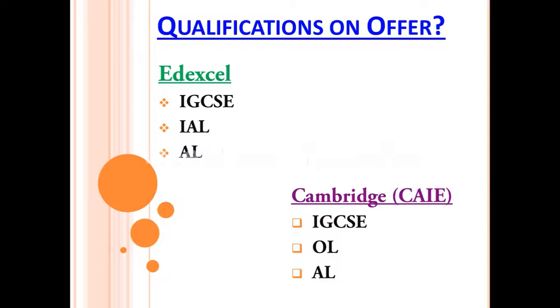Then thirdly, they offer an Advanced Level qualification. If you quickly compare Edexcel and Cambridge, Edexcel offers one O level equivalent qualification and two Advanced Level equivalent qualifications, but Cambridge does the exact opposite. They offer two O level equivalent qualifications and one Advanced Level qualification.